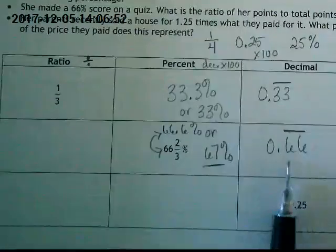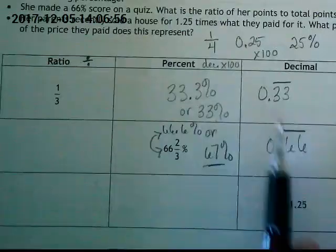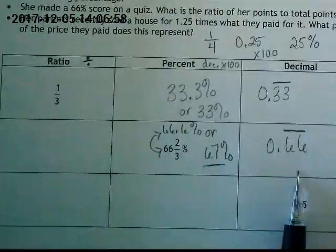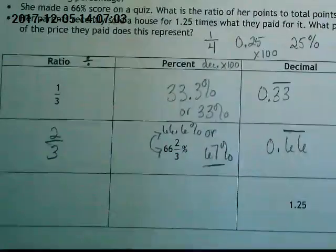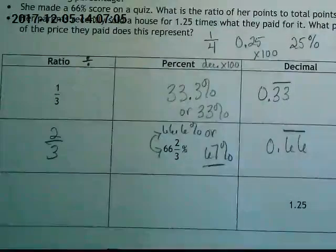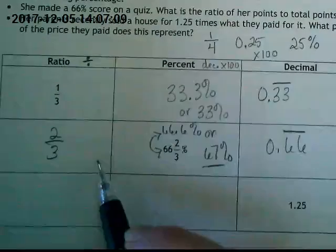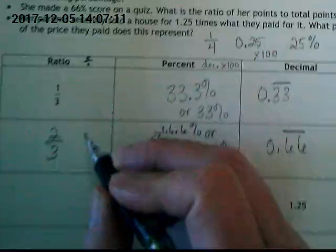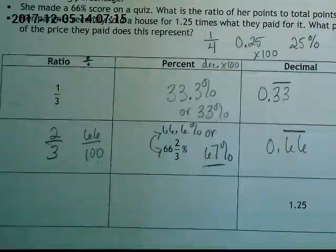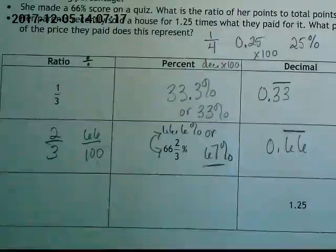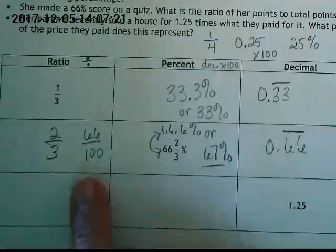What do you guys notice about this here and this here? This is one-third. This must be two-thirds. If we didn't know that just by looking at this is double this, so this must be twice that, we could put 66 over 100 because every time we have a decimal or a percent, we can turn it into a percent over 100.